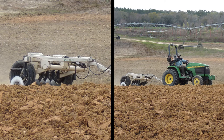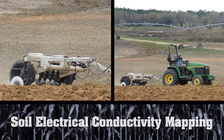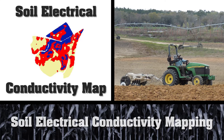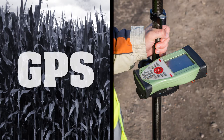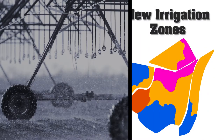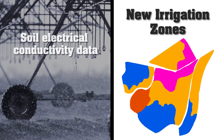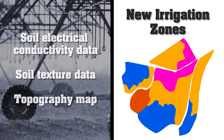We also brought a sensor that collects soil electrical conductivity data, along with a high accuracy GPS, because we know there are differences in topography. We then combined the soil electrical conductivity data, soil texture data, and the topography or elevation map into a new map.